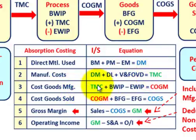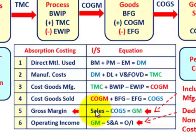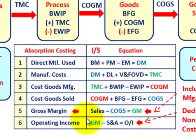Total manufacturing costs are used to determine cost of goods manufactured: add beginning work-in-process and subtract ending work-in-process. Then for cost of goods sold: take cost of goods manufactured, add beginning finished goods, and subtract ending finished goods. Gross margin is then calculated by taking sales for the period and subtracting cost of goods sold.